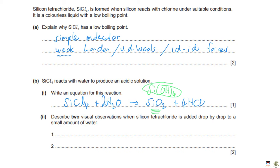Describe two visual observations when silicon tetrachloride is added drop by drop to a small amount of water. First, HCl gas is produced, so you observe steamy or misty white fumes. Second, silicon dioxide is insoluble in water, so it will be observed as a white solid.